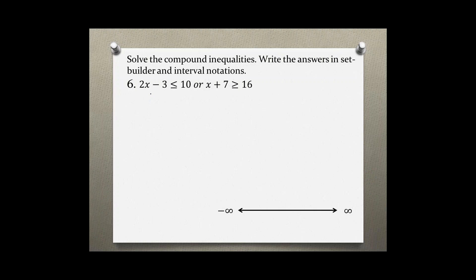To solve the compound inequalities, we'll solve them separately first. So we'll start by adding 3 to both sides of this inequality, so 2x is less than or equal to 13, then divide by 2.